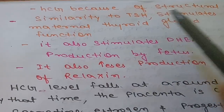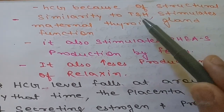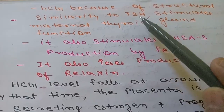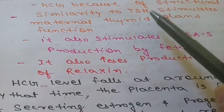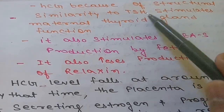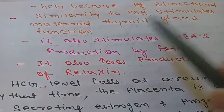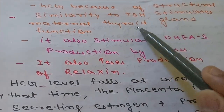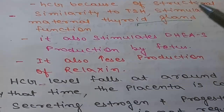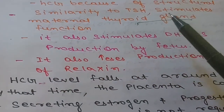Because HCG has a structure similar to TSH, it stimulates the thyroid gland of the mother to secrete thyroxine. This is due to the structural similarity between HCG and TSH and LH.